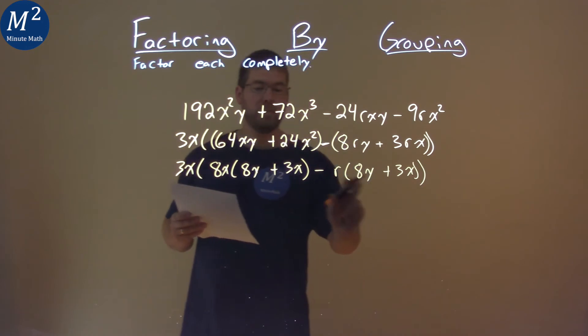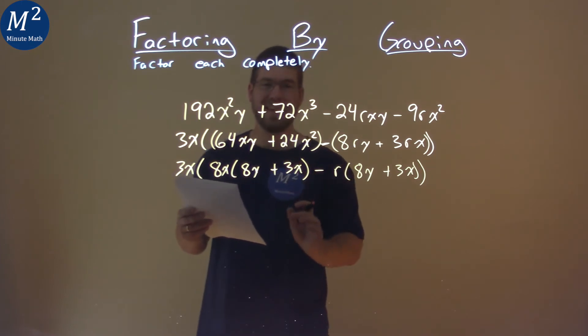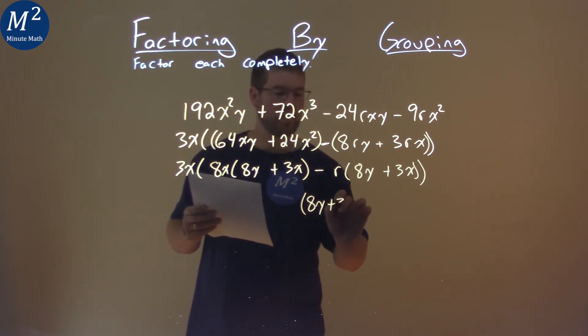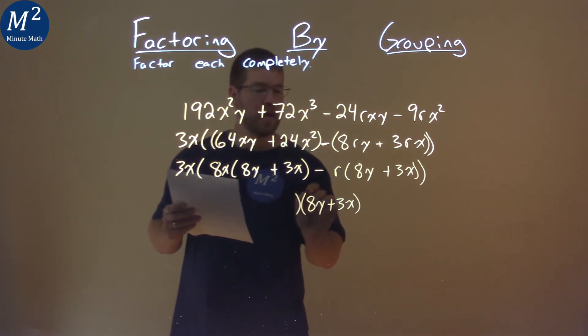Now that should look familiar because it's written twice right here. So an 8y plus 3x is in both parts, so we're going to pull that out. Pulling that out, we have an 8y plus 3x from both parts.